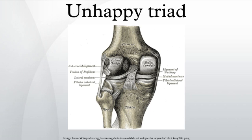A torn meniscus is commonly referred to as a torn cartilage in the knee. Menisci tear in different ways, noted by how they look as well as where the tear occurs. Two types of tears include minor, which involves stiffness and swelling within two to three days but usually goes away in two to three weeks, and severe, where without treatment, a piece of meniscus may come loose and drift into the joint space. Tear types include longitudinal, parrot beak, flap, bucket handle, and mixed/complex.